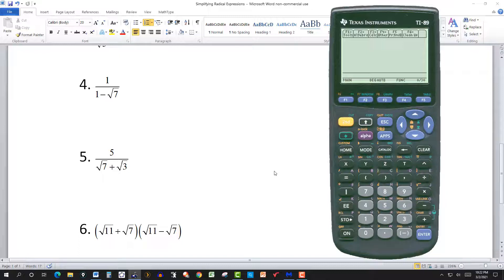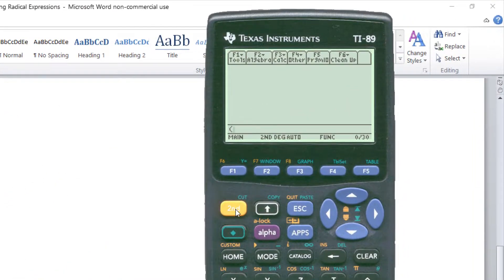And this one here is strictly multiplication. Radical 11 plus radical 7 multiplied by radical 11 minus radical 7. So it's just a multiplication here. So put parentheses, and it's the square root of 11, close parentheses there, plus radical 7, so square root, close parentheses again. Open parentheses here. Hit enter.